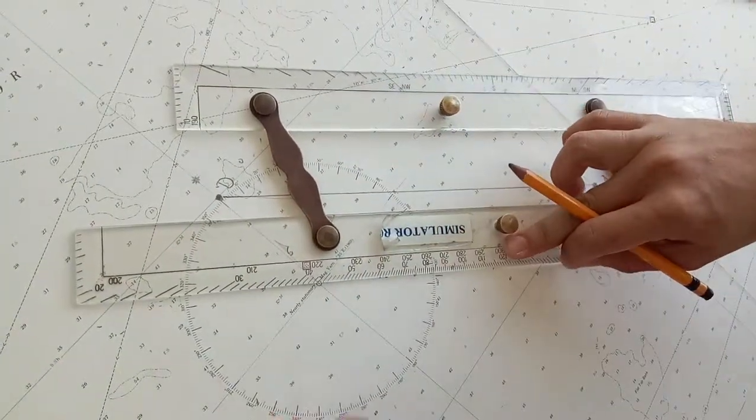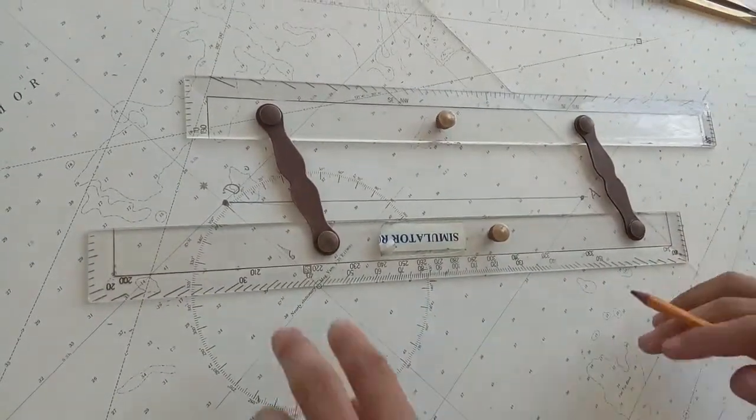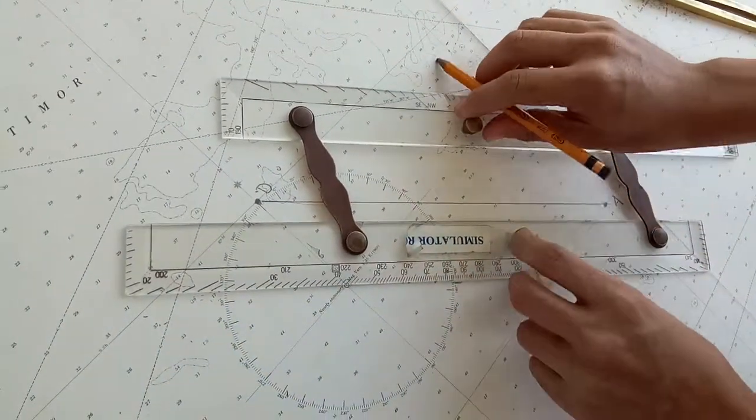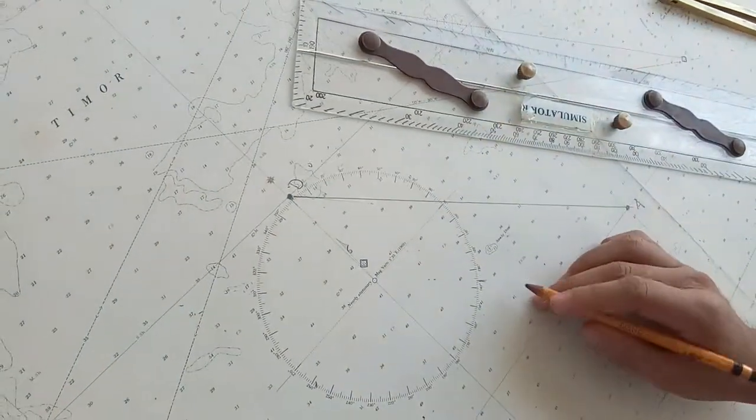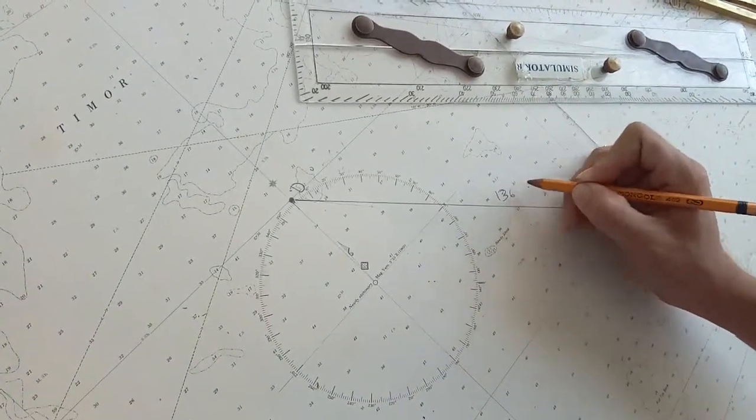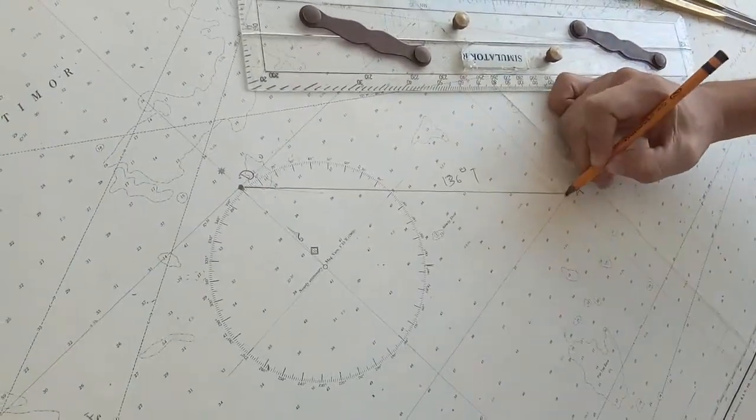This is compass rose. So it's used to get your course. Now read it. Our course is 136 degrees true. Why? Because we're arriving here.